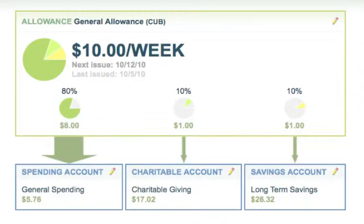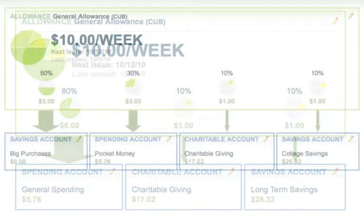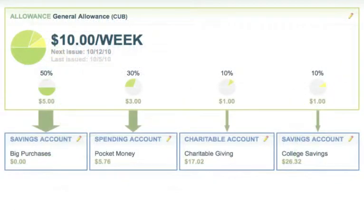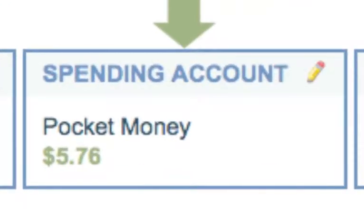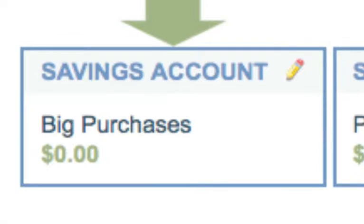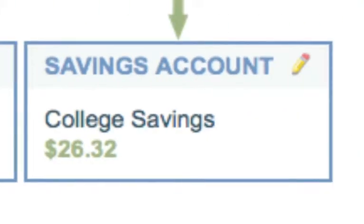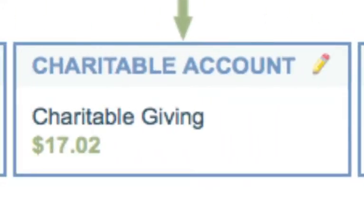Suppose you want to change this standard three-bucket approach into your own custom four-bucket approach, where the four accounts are a pocket money account for spending on small everyday stuff, a new big purchases account where saving happens for occasional big ticket items like a bike or a smartphone or a laptop, a college savings account to help save for future college expenses perhaps with matching contributions from mom and dad, and a charitable giving account just like before.